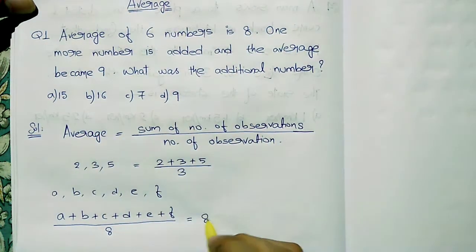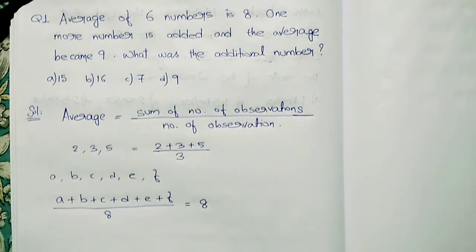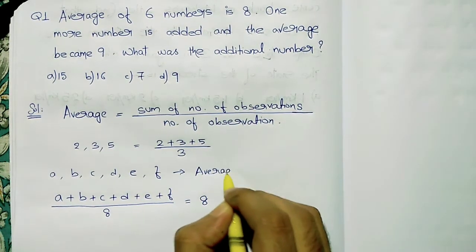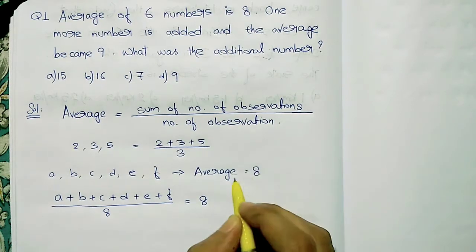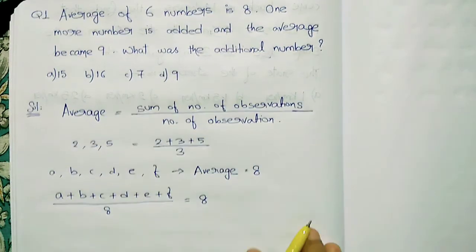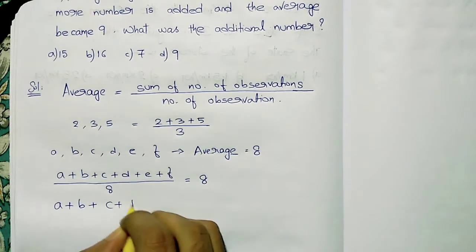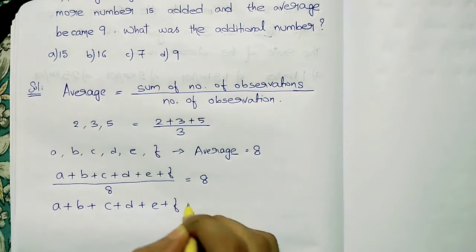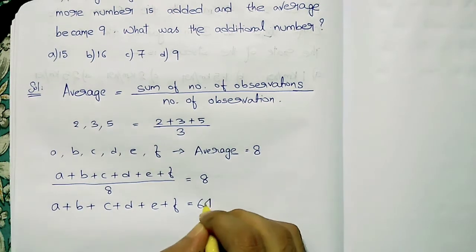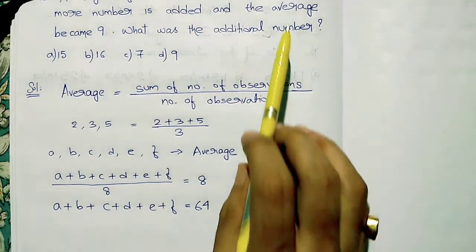If the average is 8, then what is the number count? The number count is 6. If average equals 8, then a plus b plus c plus d plus e plus f equals 8 times 8, which gives us 64.